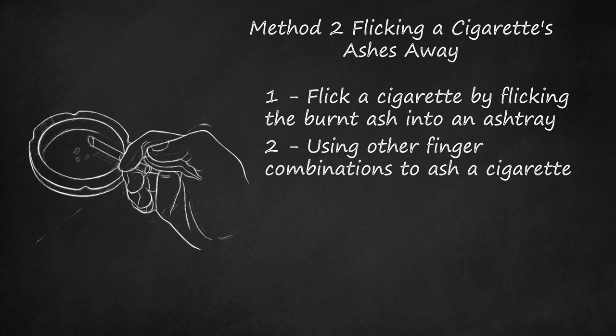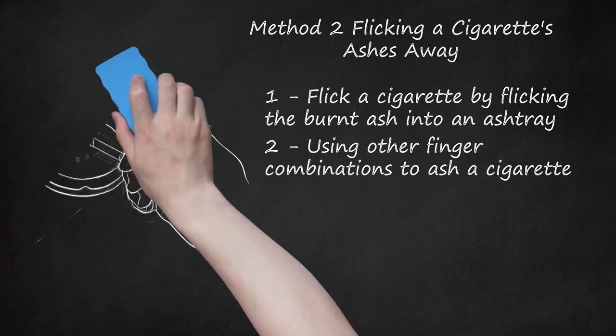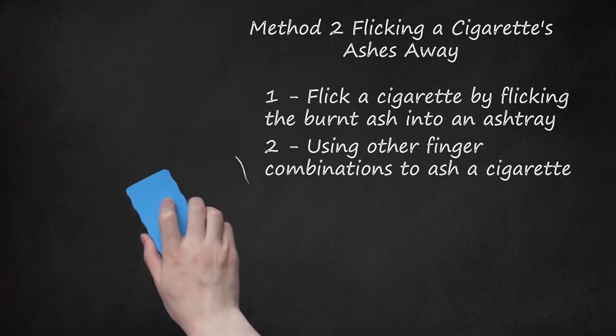An alternative method is to hold the cigarette between the thumb and index finger. Then, tap the middle finger against the cigarette to ash the cigarette. You could also hold the cigarette in your index finger and middle finger. Squeeze the cigarette tightly. Use the thumb to flick the filter. This should flick the ash into the tray.